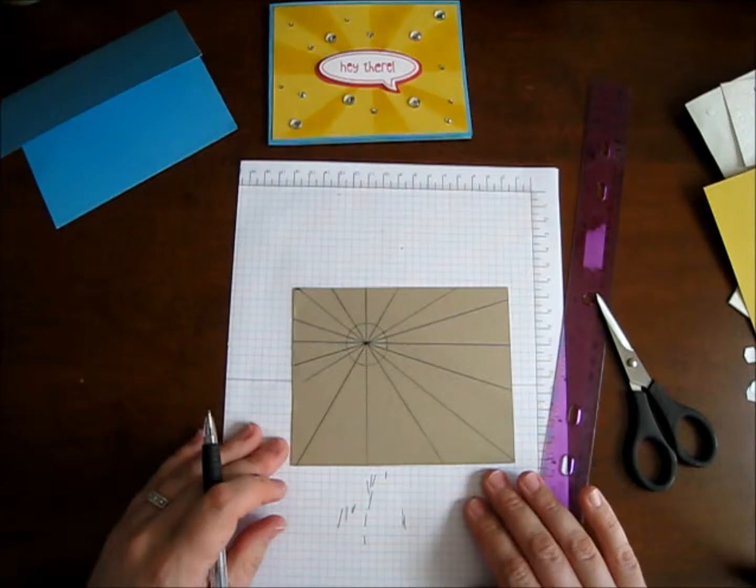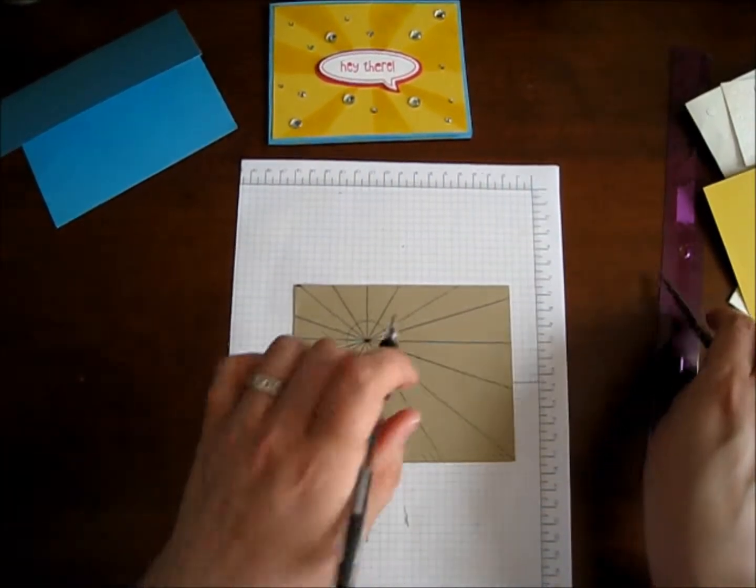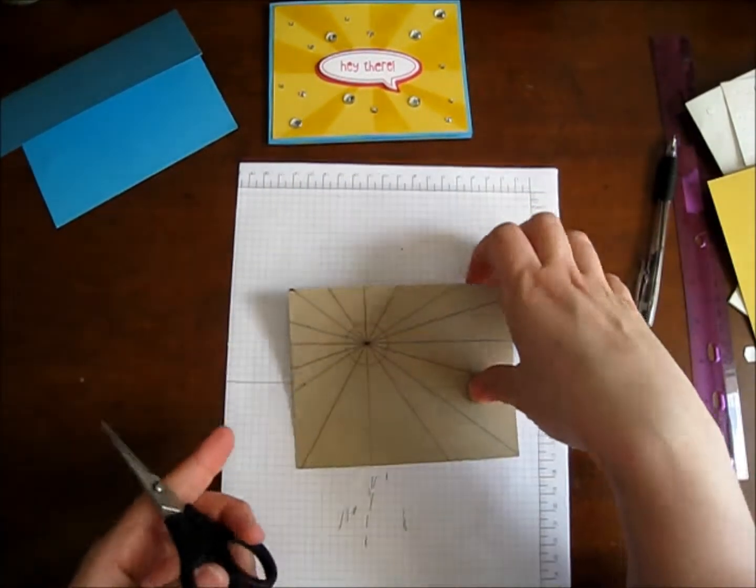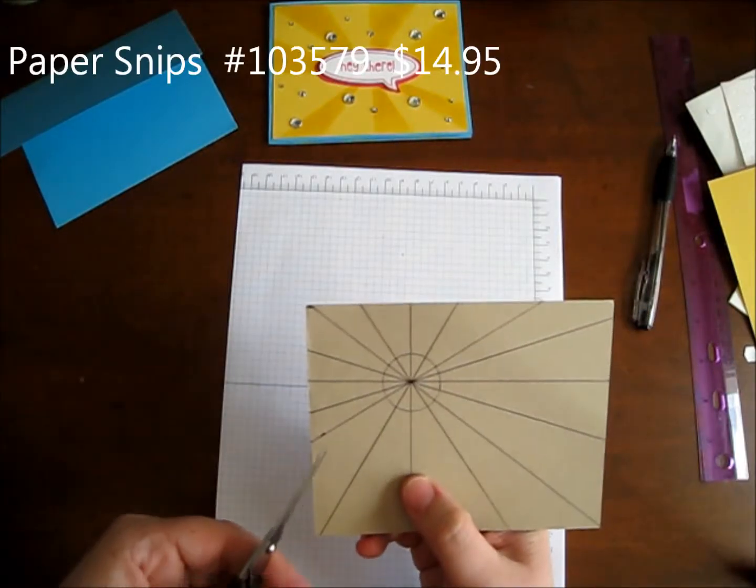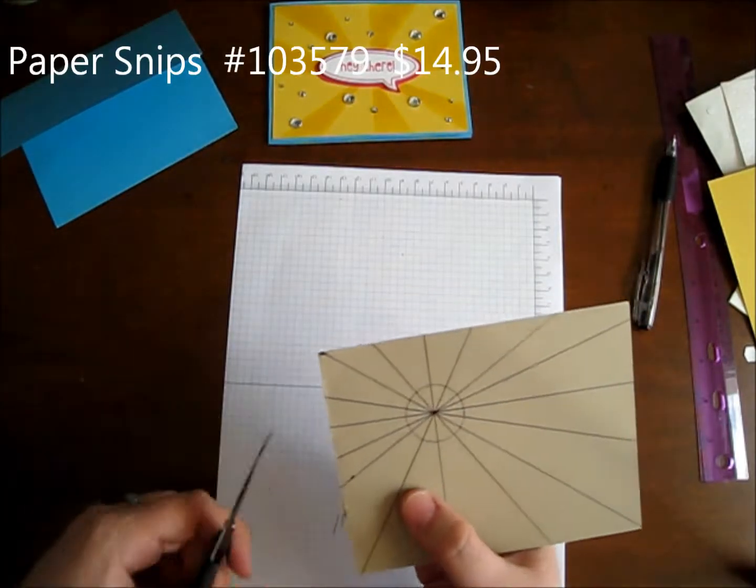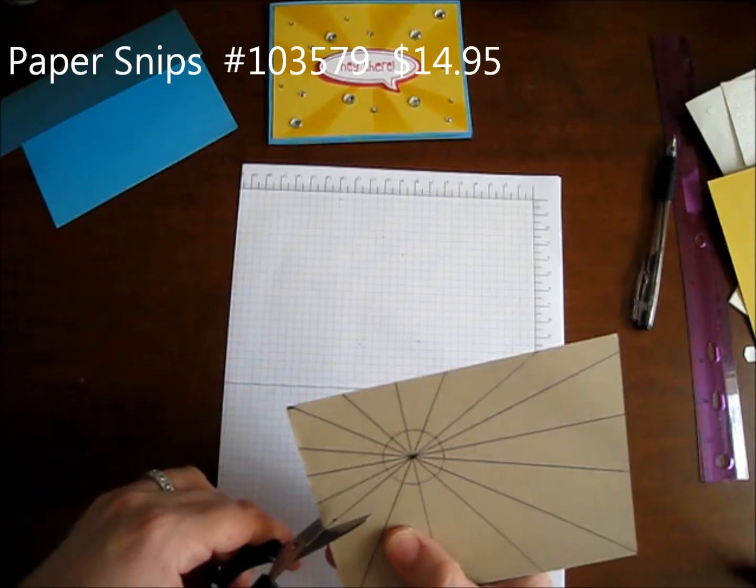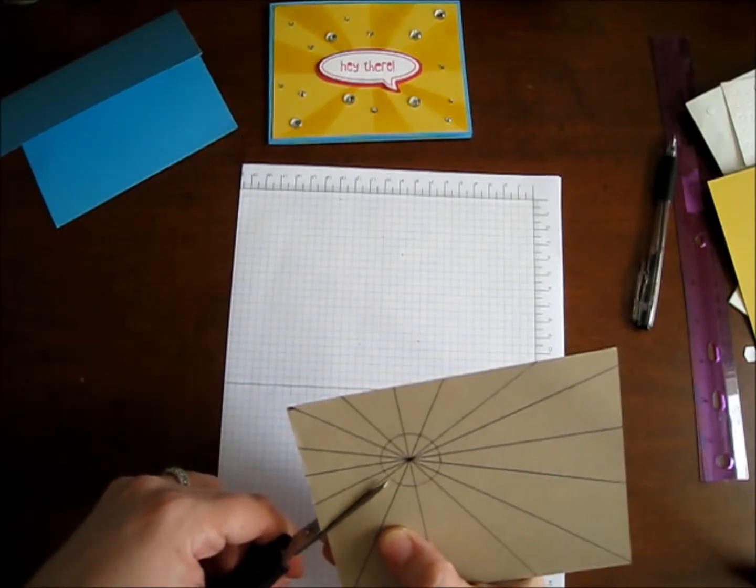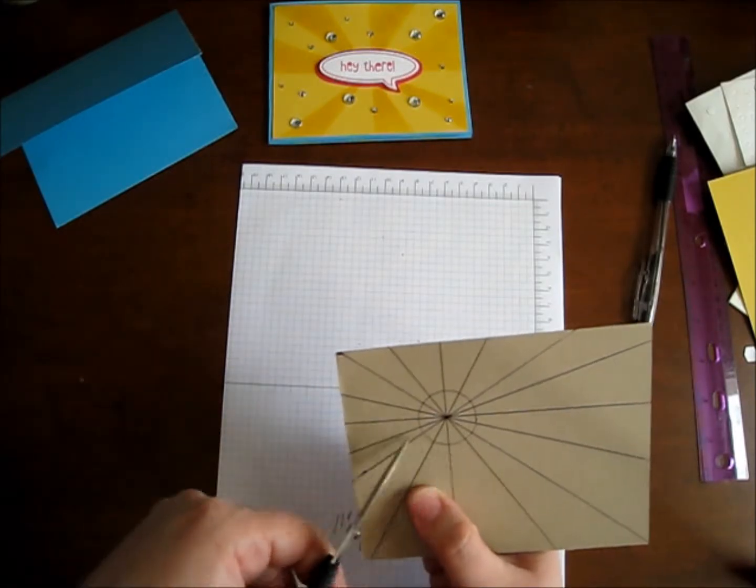There, I think that'll work. So there we have it. There are our star bursts. So we're done with our ruler. Next, what you're going to need is your paper snips. And what you're going to do is you're going to cut out a section. So you're going to follow the line all the way up, but you're not going to go right to the middle.